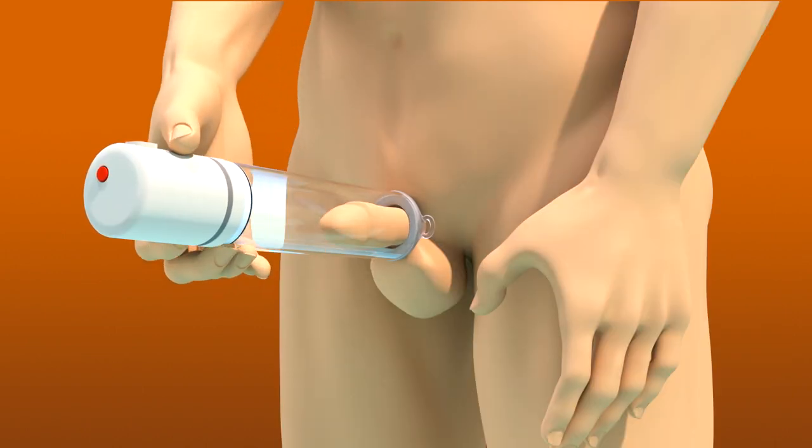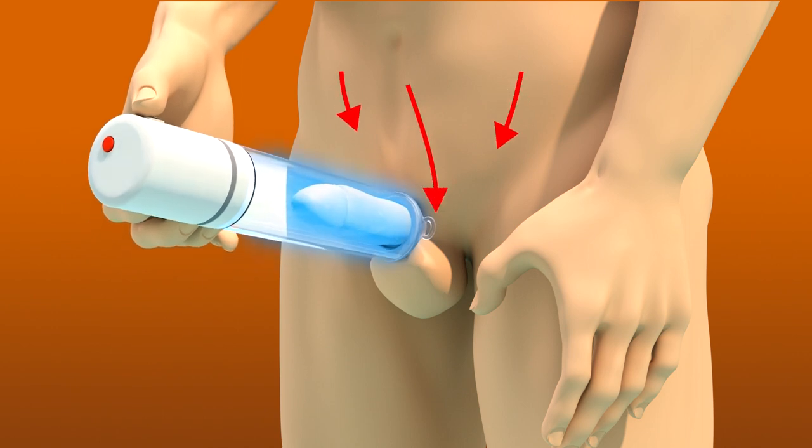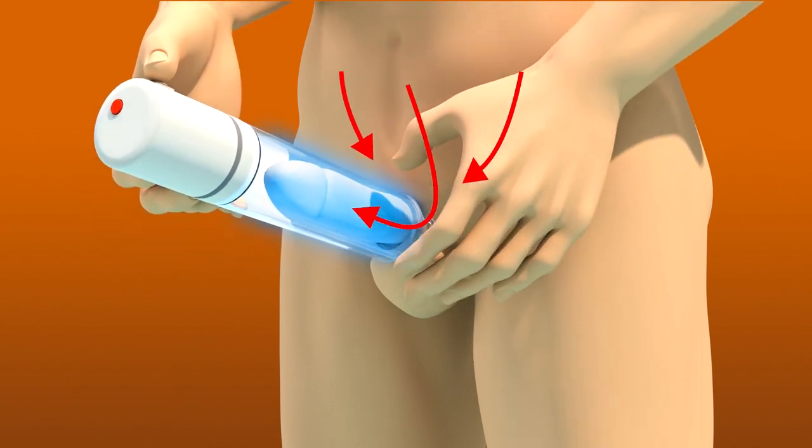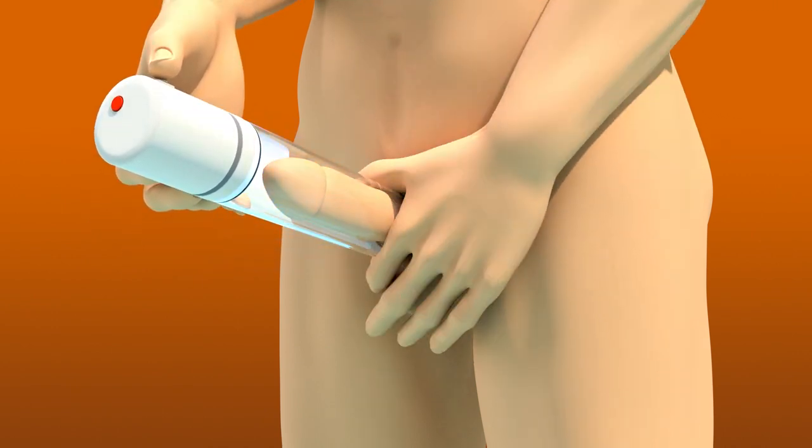Finally, press the activation button. Once a firm erection is created, slide the ring off the cylinder onto the base of the penis.